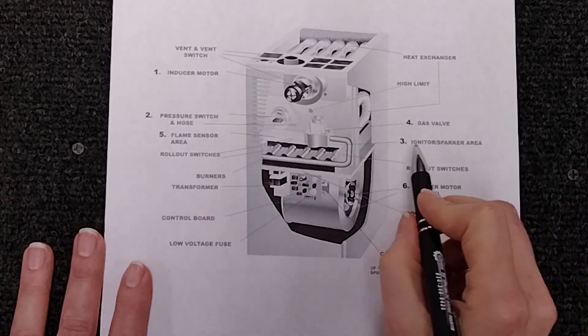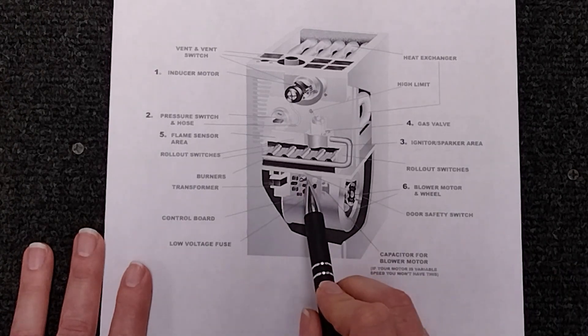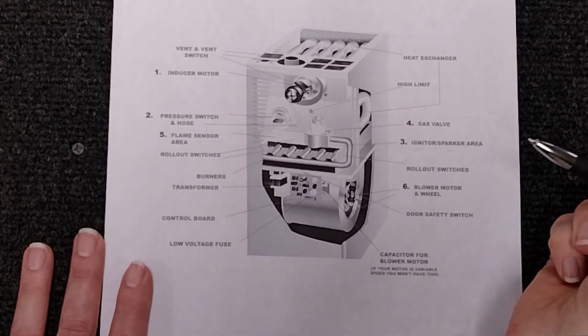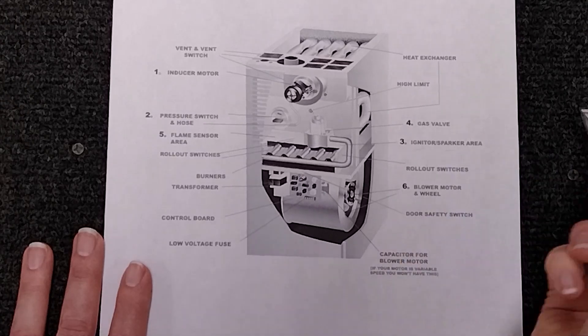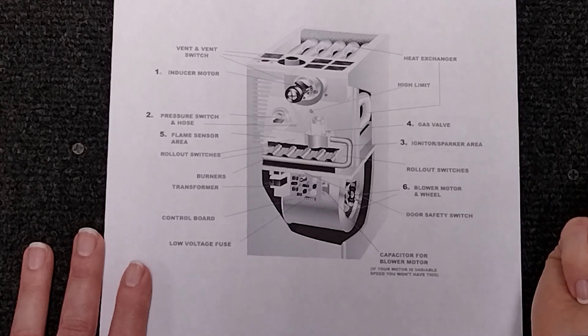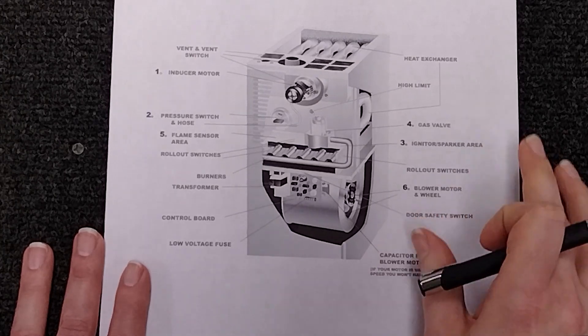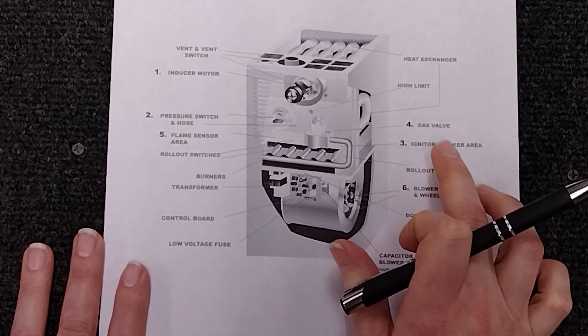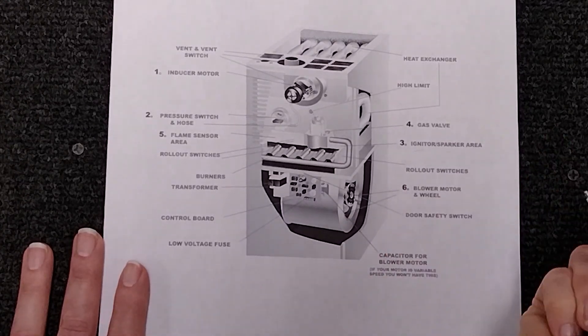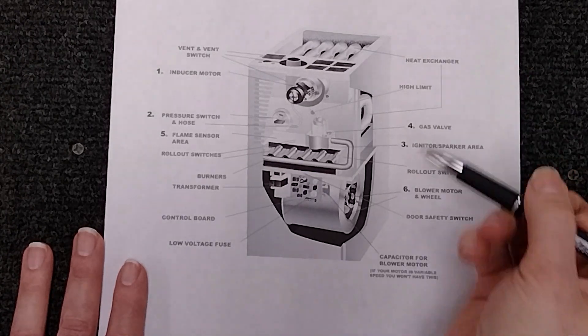Next in line we've got your igniter or sparker if you've got one of those on your board here like this one and once that comes on it's going to stay on for a little bit until it shuts off and once it shuts off the board sends the voltage to your gas valve to open and allow the gas through. Yes you heard me correctly the igniter shuts off before the gas valve goes through and that igniter is burning hot so it's going to still be extremely hot once that gas goes through to ignite.